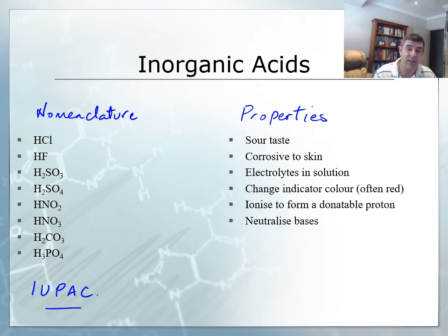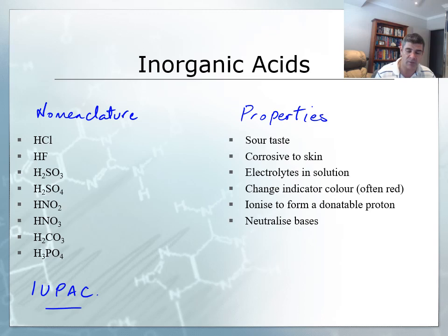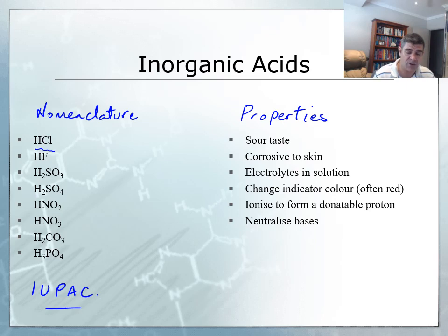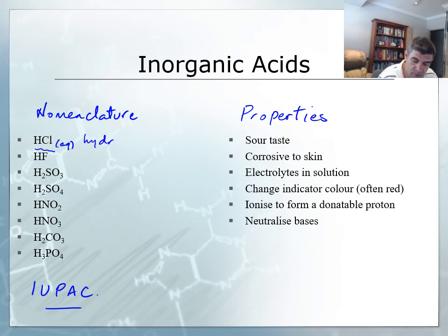The ones listed here are just a very small number of the acids that exist, but we will be looking at most of these because they're the most common ones. I think the most important thing to set up in terms of acids is if we look at this first one, which is hydrogen chloride — a compound made from hydrogen and chlorine. When this is in aqueous solution, the solution is acidic, and we then refer to it as hydrochloric acid.